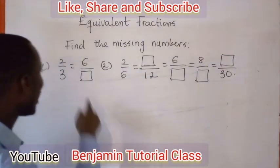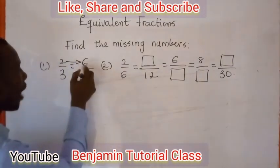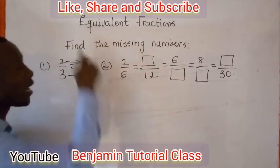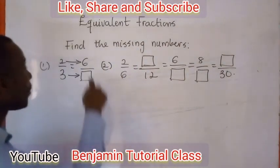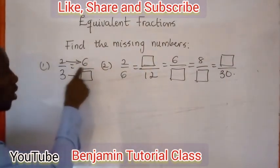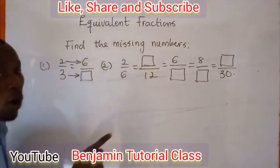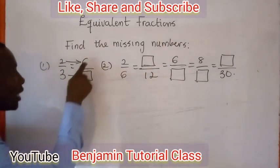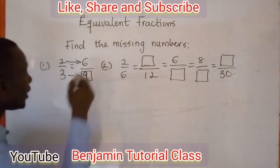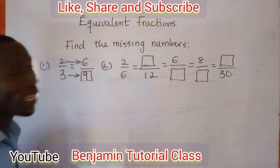How do I approach that? You consider that there is a link between 2 and 6, and a link between 3 and the box. Pick the biggest number, which is 6. Say 6 divided by 2 — that gives you 3. You now multiply your answer by the denominator: 3 multiplied by 3 gives 9. So 2 over 3 is equivalent to 6 over 9.